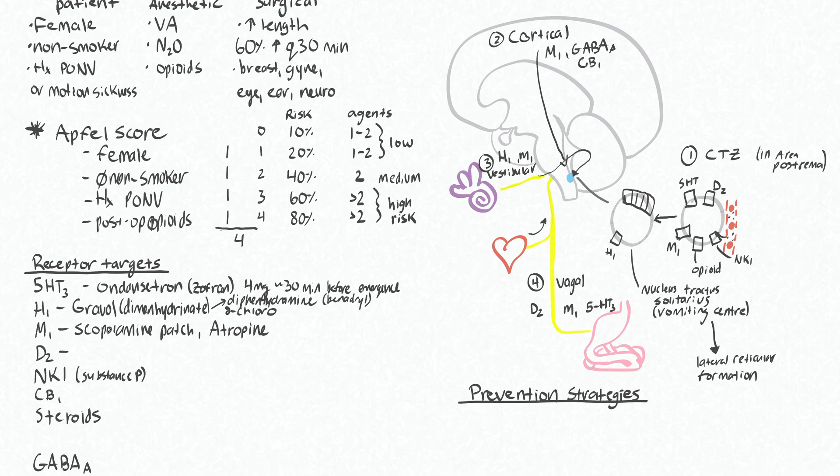For dopamine receptor antagonists we have basically two classes of drugs that do this, so we have the butyrophenones, and I find these challenging to remember the drug class names because we don't even use the second one clinically, which is the phenothiazines. I should say we don't use these anymore.